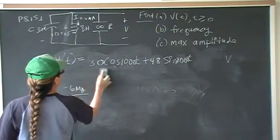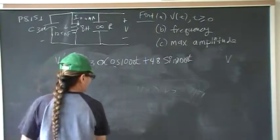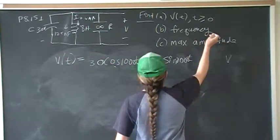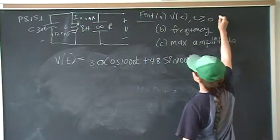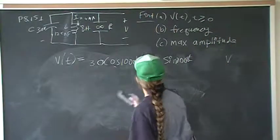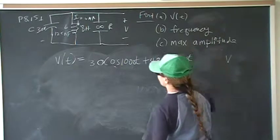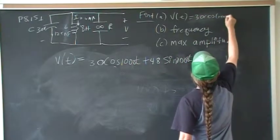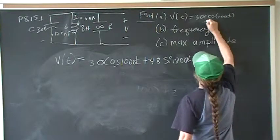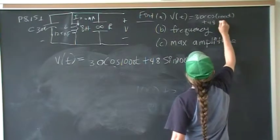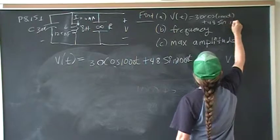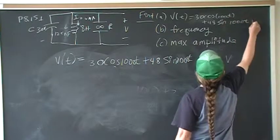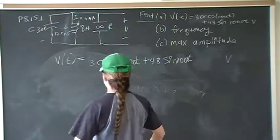So the answer to that is 30 cosine 1000t plus 48 sine 1000t volts. Frequency is just omega d.